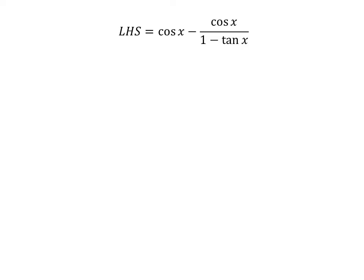Let us start from the left hand side of the identity. The left hand side of the identity is equal to cosine of x minus cosine of x upon 1 minus tangent of x.